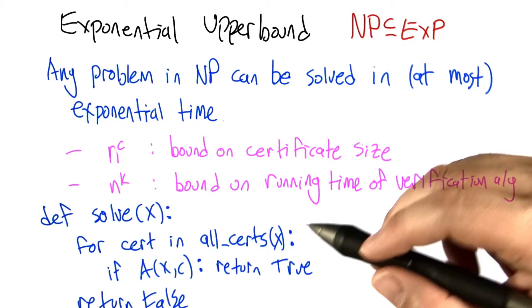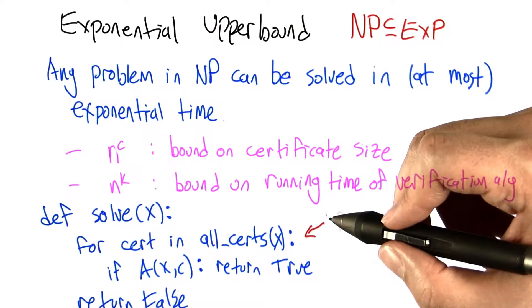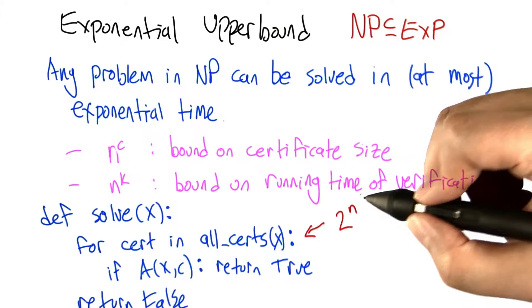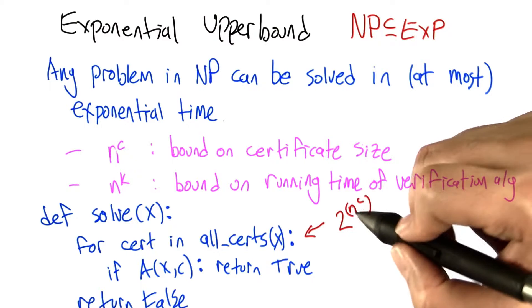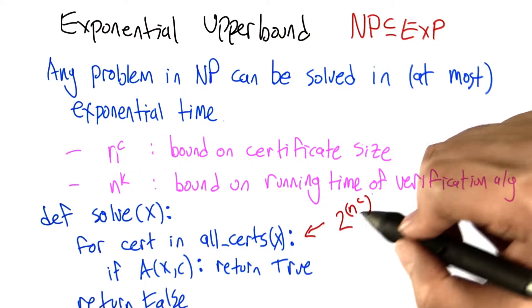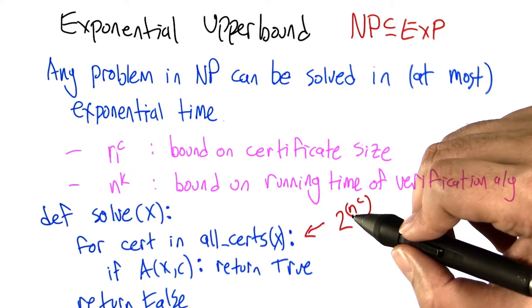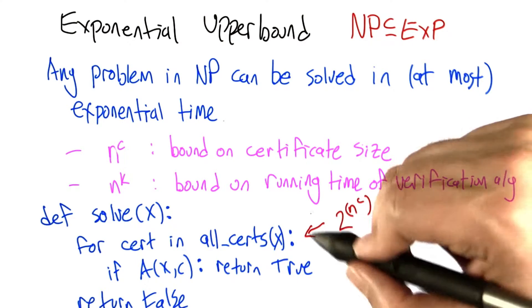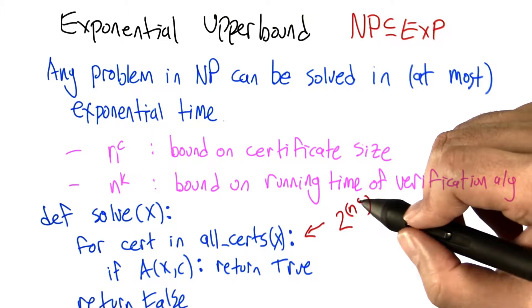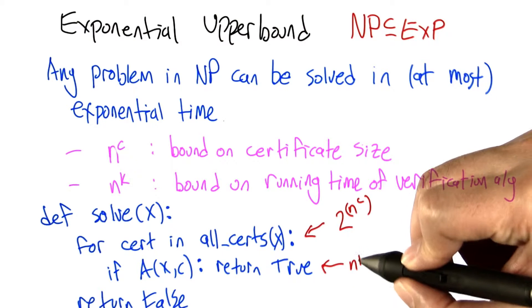The running time of this algorithm is, well, the number of times we go through this loop is like 2^(n^c). If we imagine the certificate size is written down in bits, this is the number of different assignments of bits to certificates of this size. So if we run through all possible ones of those, we know we've checked everything. And then for each of those, the running time is on the order of n^k.